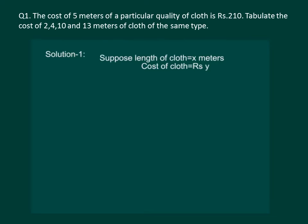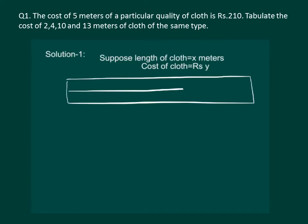Firstly, let us suppose that length of the cloth be x and cost of the cloth be denoted by y. Now we are in a position to construct a table between the variables x and y for which we are given that for 5 meters of cloth we have to pay Rs. 210. And we have to calculate value of y for x equal to 2, x equal to 4, x equal to 10 and x equal to 13.